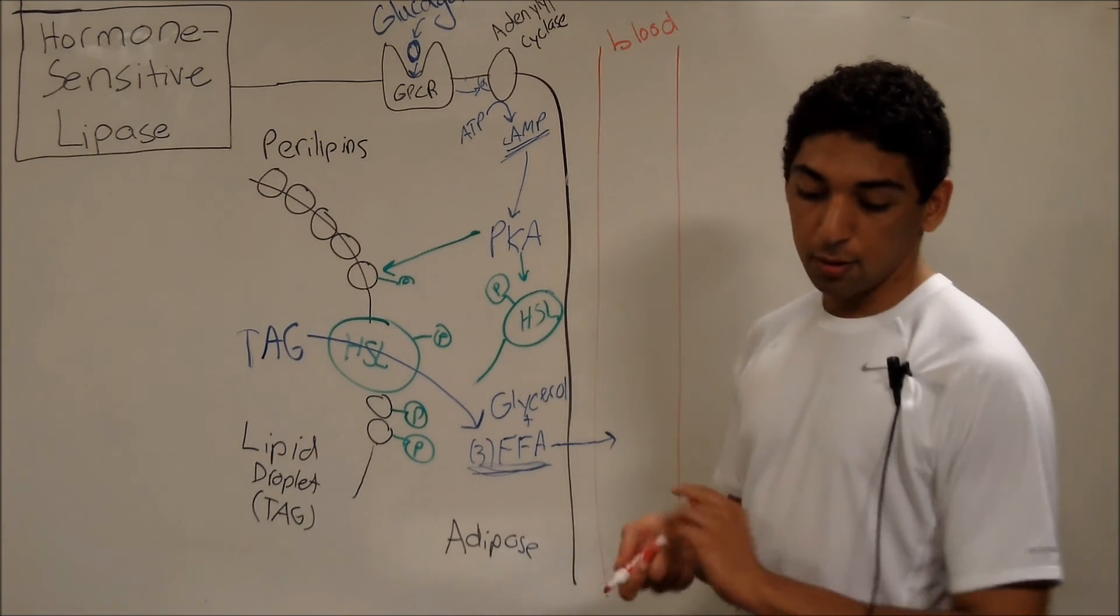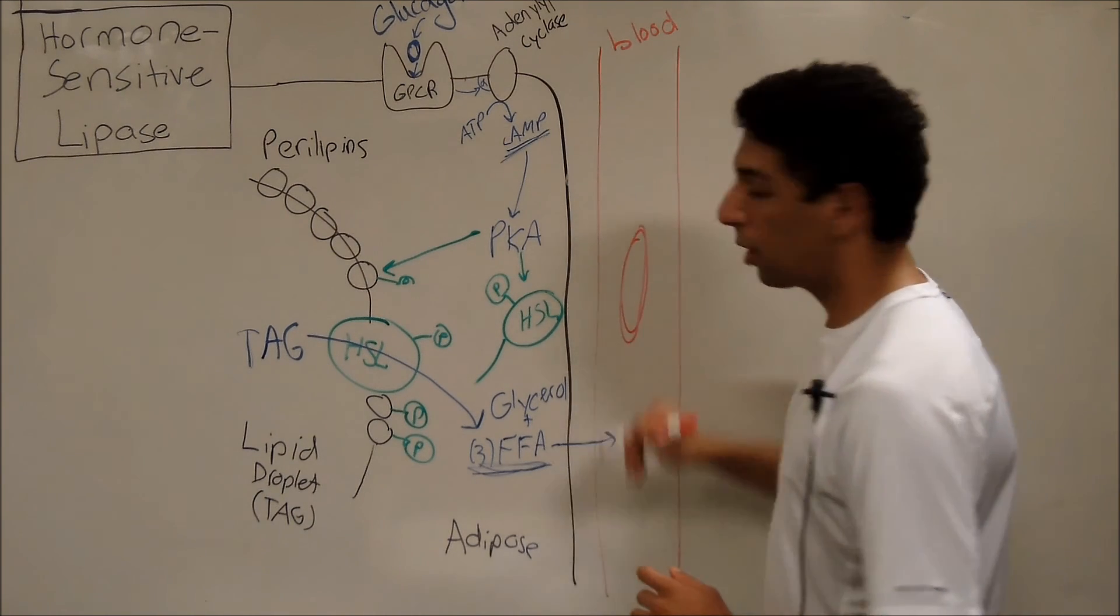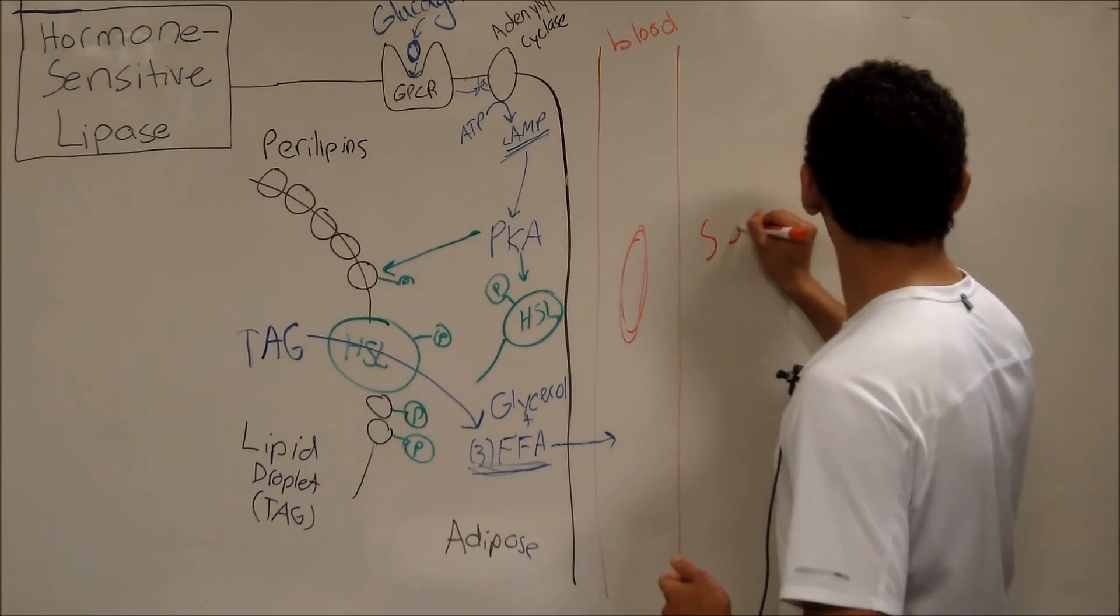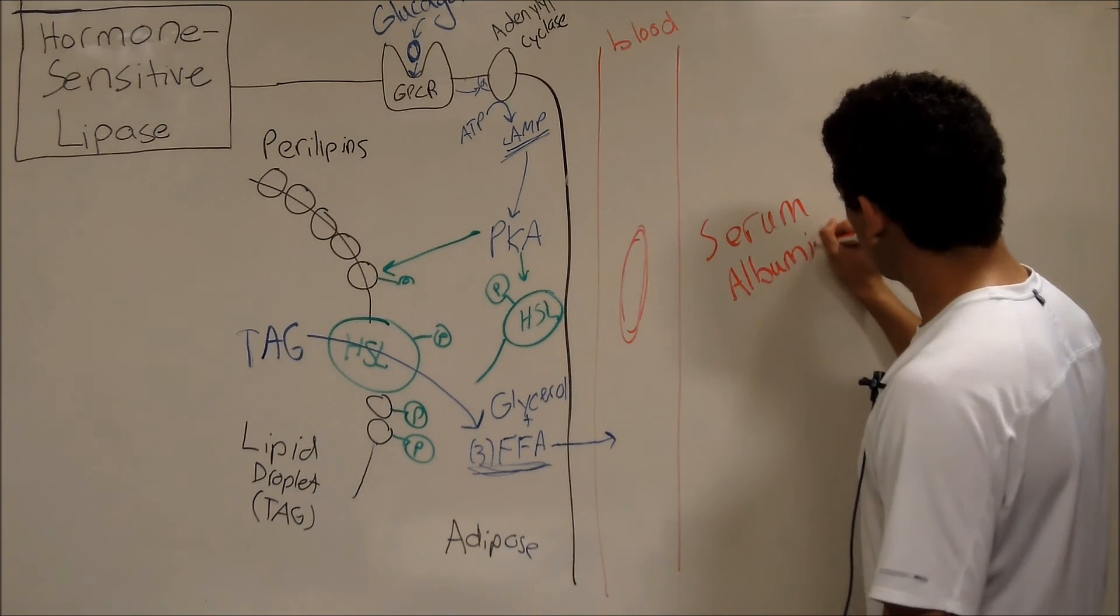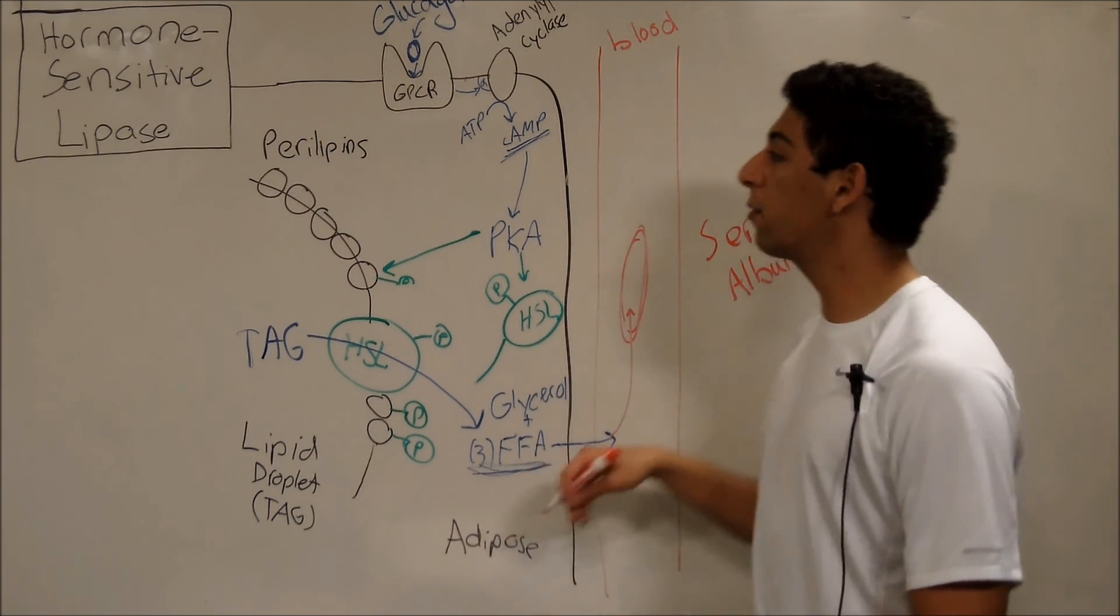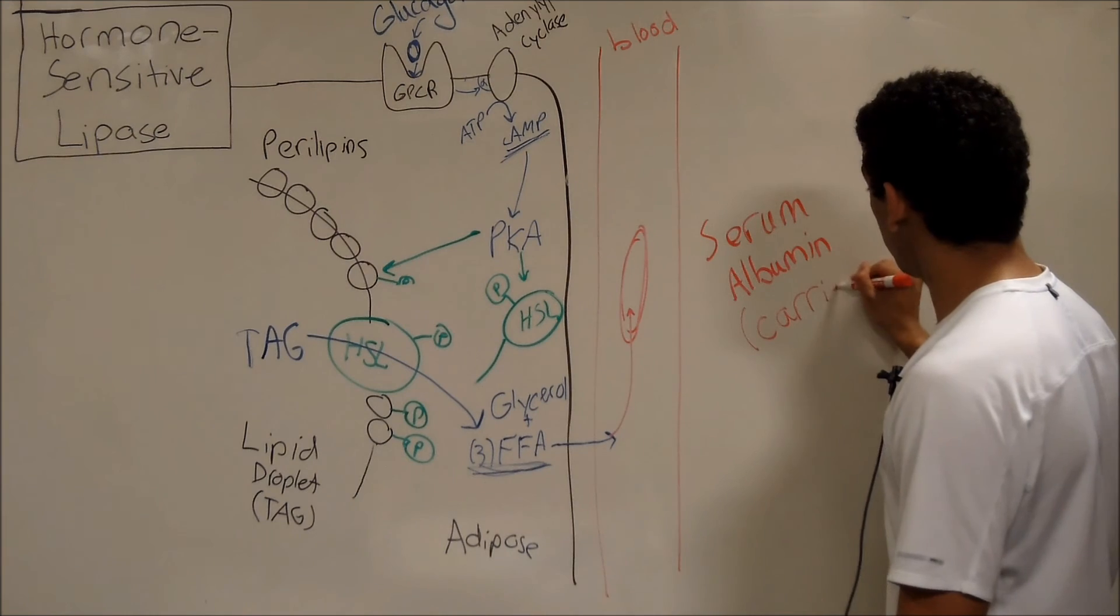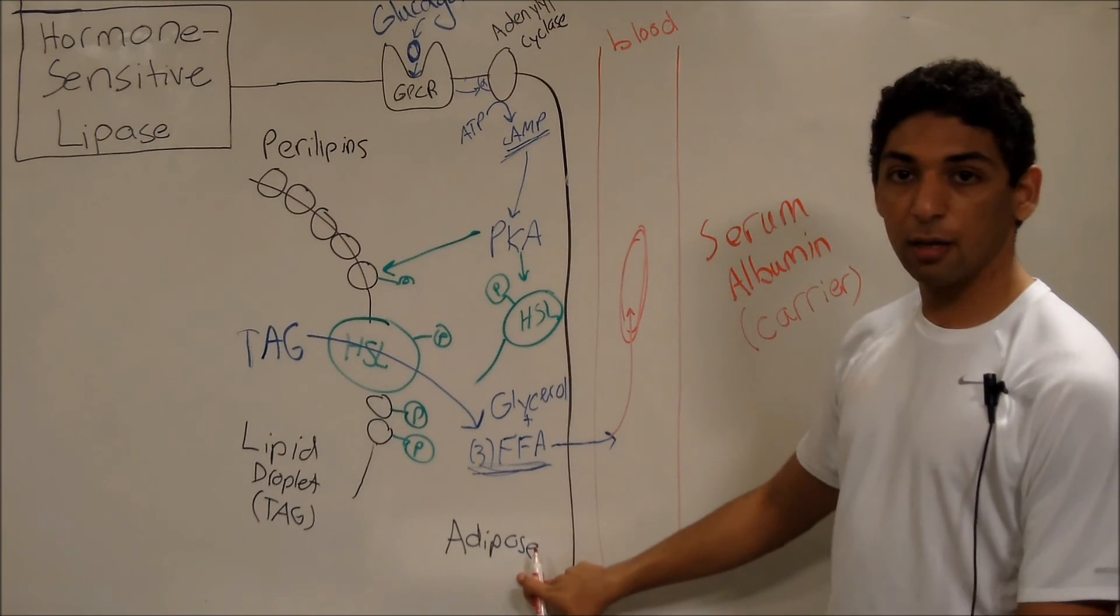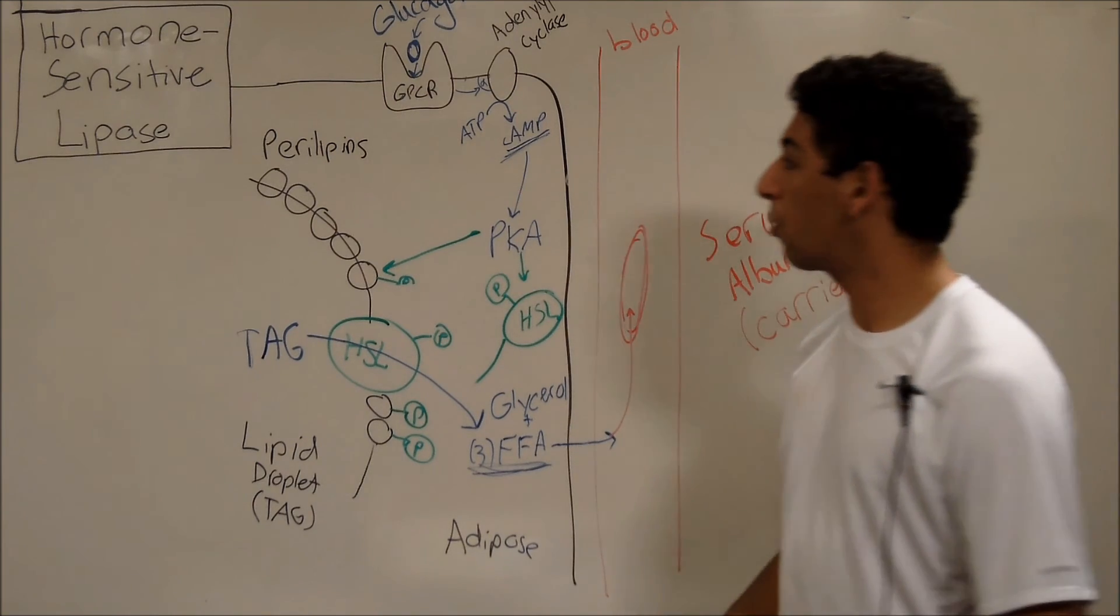So, our body, being as brilliant as it is, has invented a protein. I like to draw it kind of like a skateboard or a surfboard, surfing through the blood, but it's a protein, and it's called serum albumin. Serum albumin takes the free fatty acids from the blood, and it carries them to wherever in your body it needs to go. So, serum albumin, you can think of as a carrier molecule. It is a carrier molecule. It carries free fatty acids from the adipocyte to wherever in your body they need to be used. For example, muscles use a lot of this when you're working out.